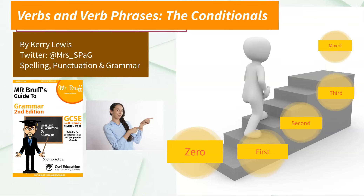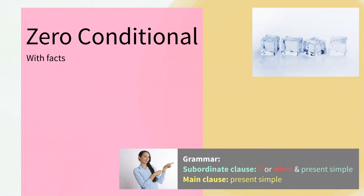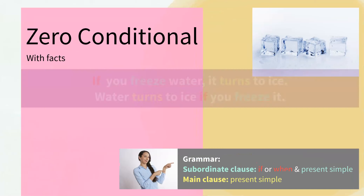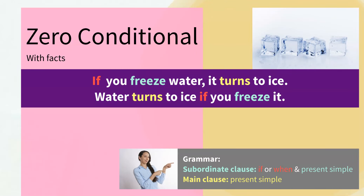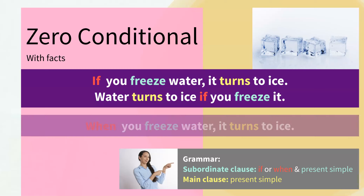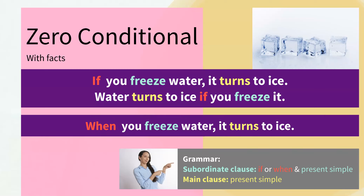Let's begin by looking at the zero conditional. We use this when we talk about facts. If you freeze water, it turns to ice — well, we can't challenge that fact, can we? You can also swap each half of the sentence around to change the word order: 'Water turns to ice if you freeze it.' And you can do this with all of the sentences we're going to be looking at in today's video.